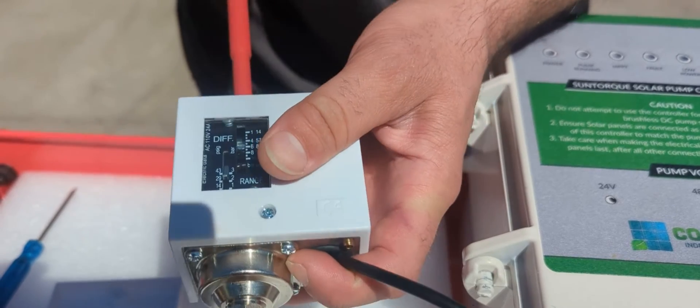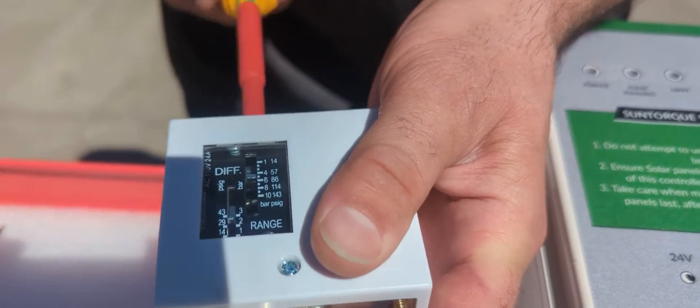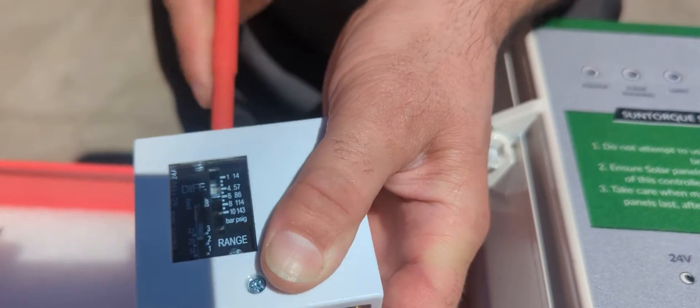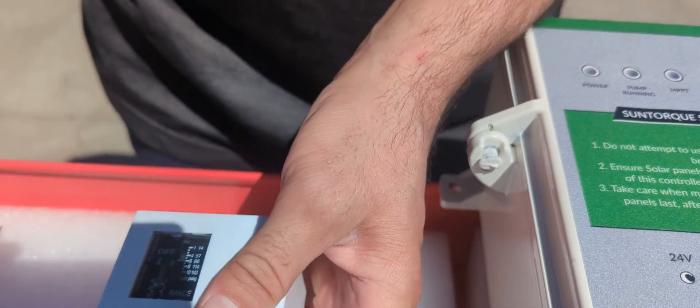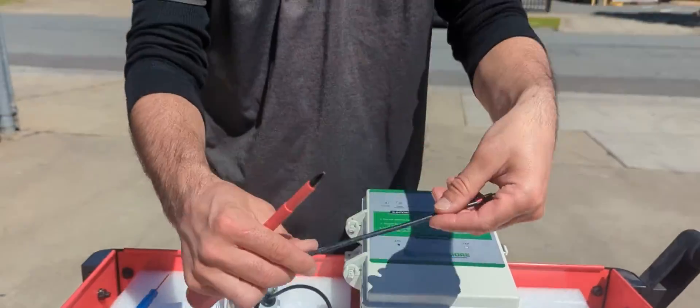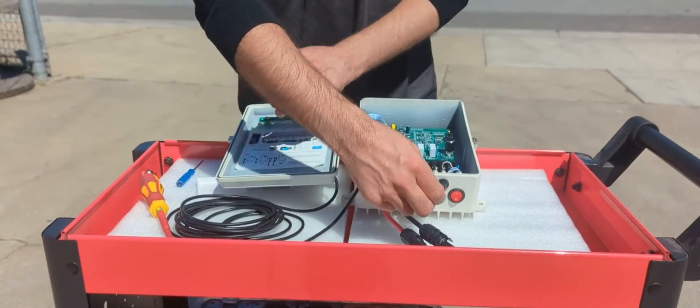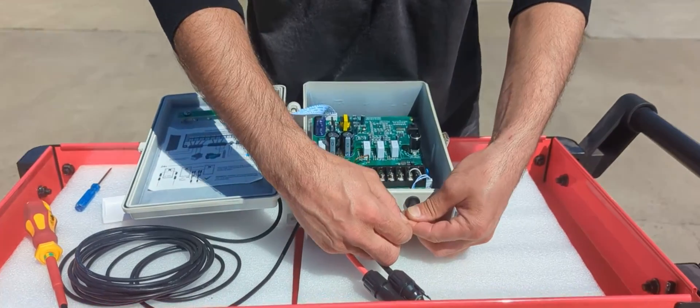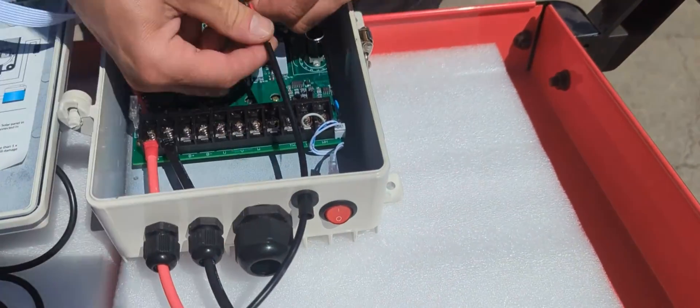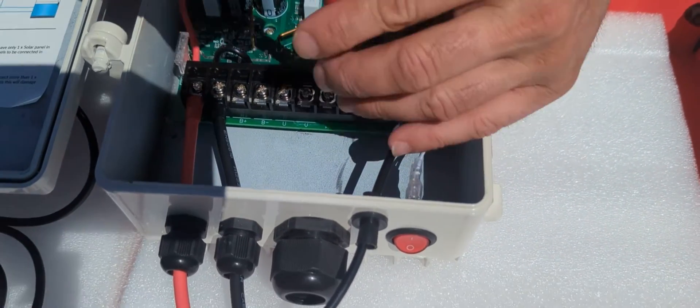And you can see here the gauge going up. So I'm decreasing there and this is where I'm increasing. Now to wire this into the control box, take the other end of your cable, come up through this gland here and we're going to be wiring it into the TC and TH terminals just here.